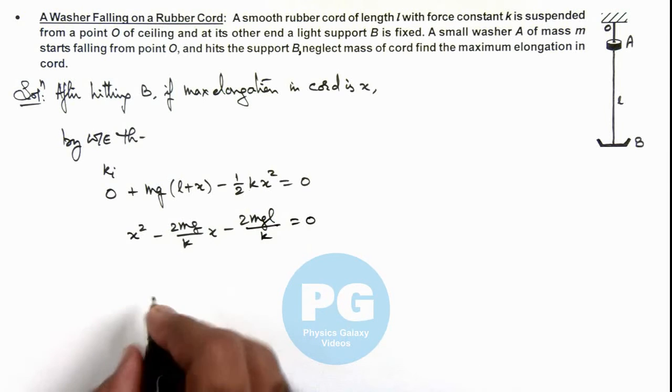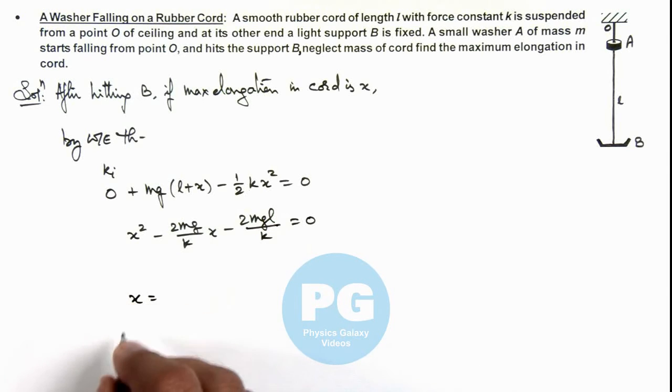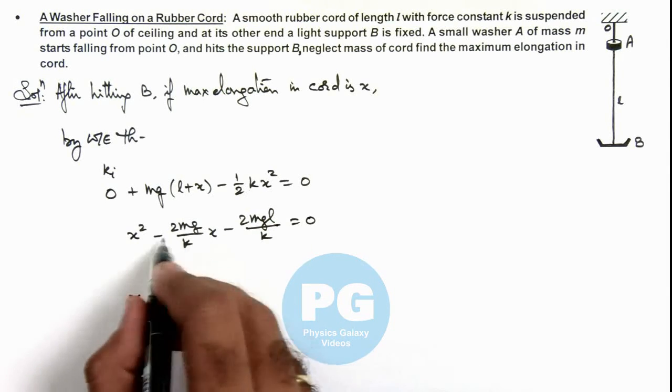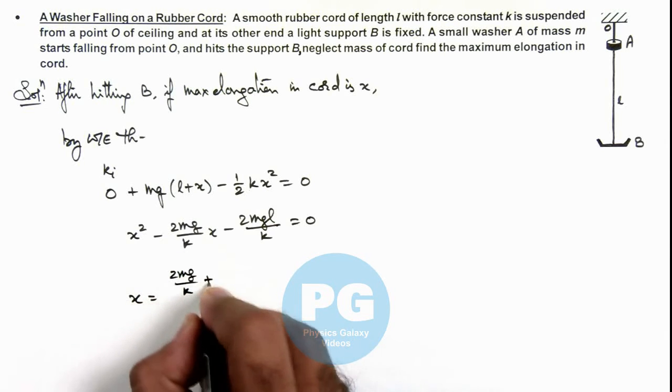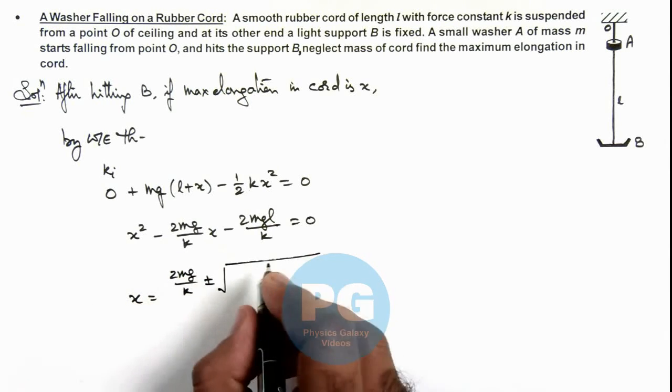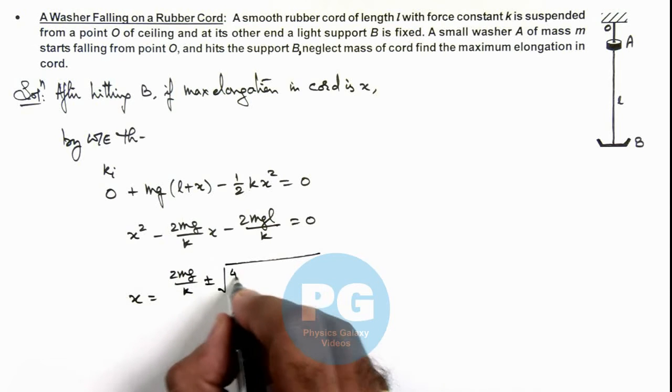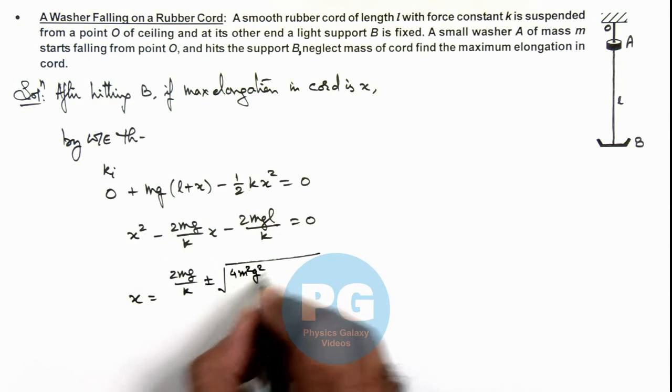So from this quadratic equation directly we can get the value of x, which is -b, this is 2mg/k, plus minus root of b² will be 4m²g²/k².